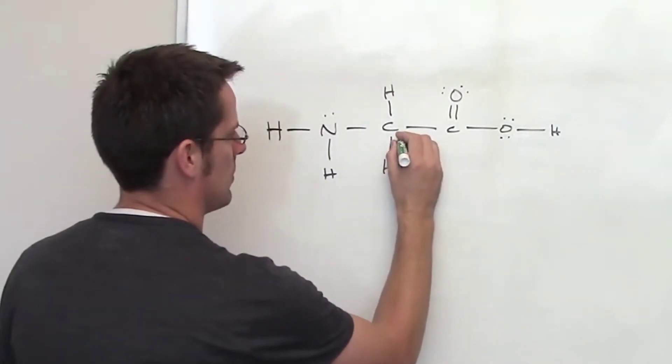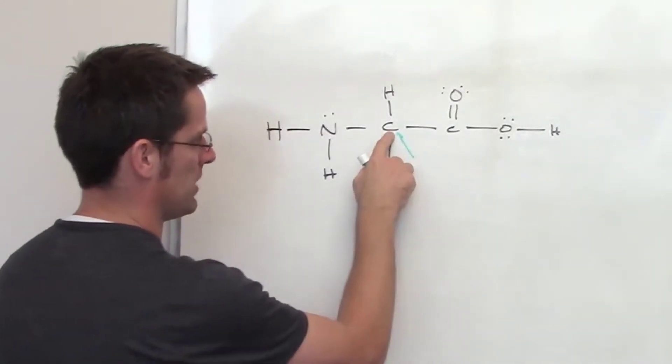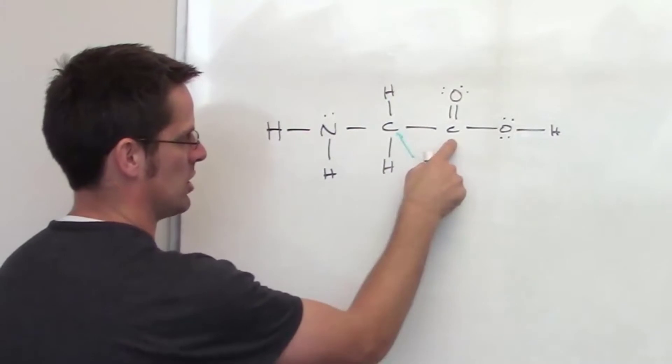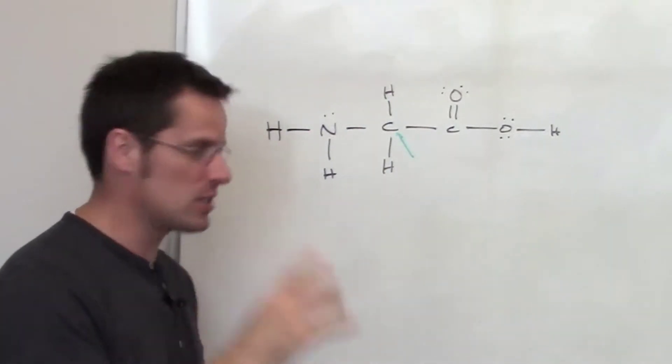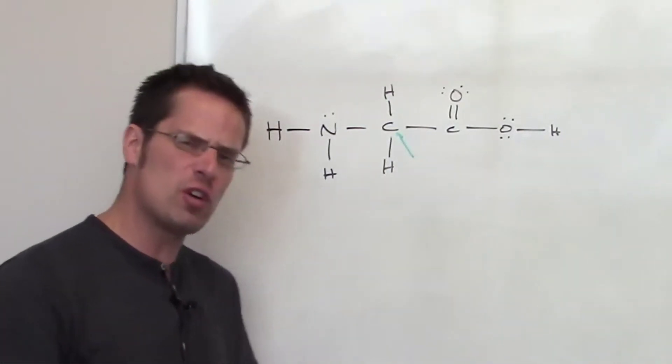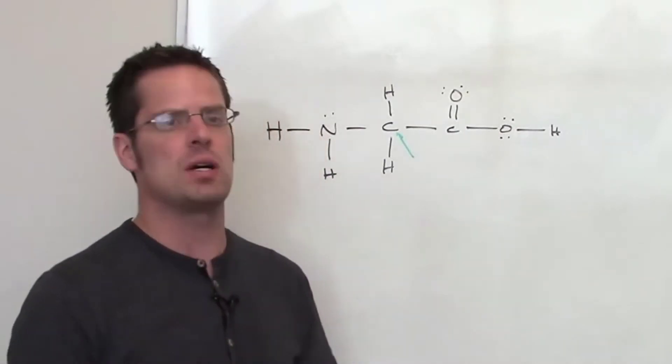got four things, let's start with this carbon atom right here. It has four things around it: hydrogen, hydrogen, nitrogen, carbon. If I've got four things around a central atom, what's the furthest you can get those four things apart? Well...